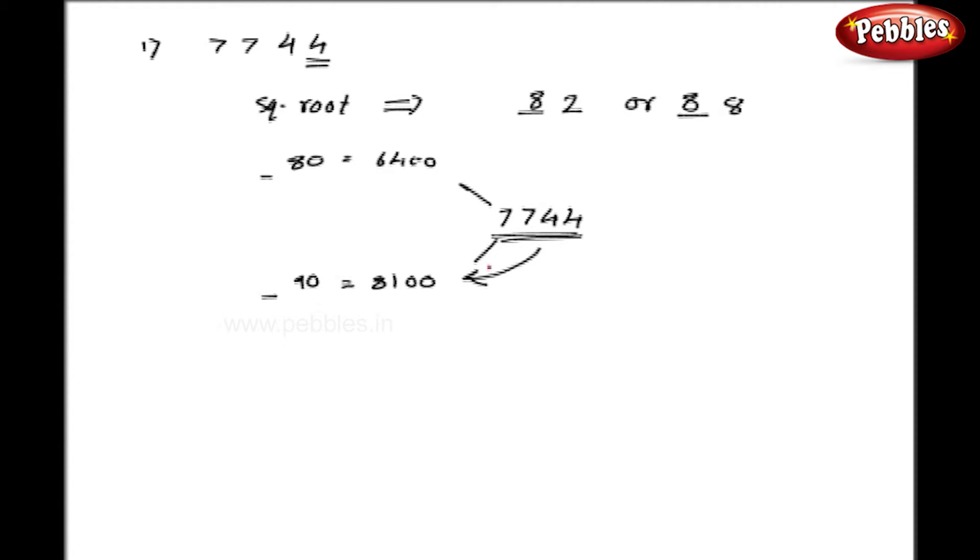But as you can see, my number 7744 is closer to 8100 than 6400. So, my square root will be also the higher number, that is 88. So as an answer, my square root is 88. So square root of 7744 is 88.